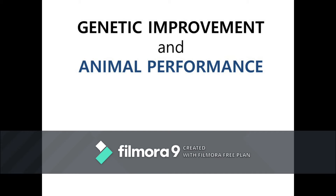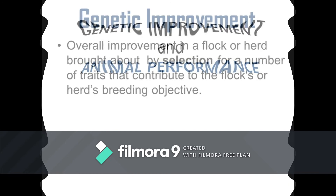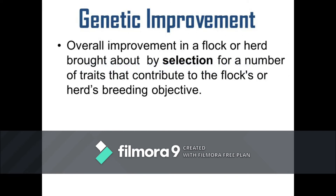In this video, we will discuss genetic improvement in animal performance. We define genetic improvement as the overall improvement in a flock or herd brought about by selection, giving due considerations to a number of traits that contribute to the flock's or herd's breeding objective. The breeding objective refers to the traits that must be improved to influence the profit of the production system.